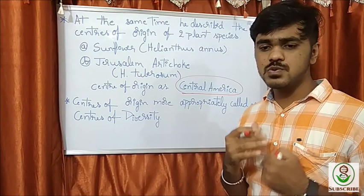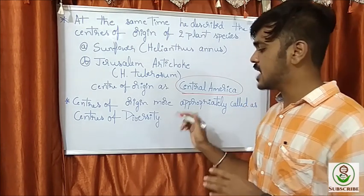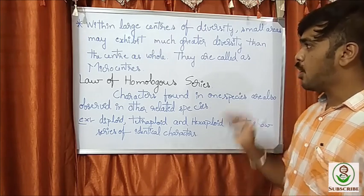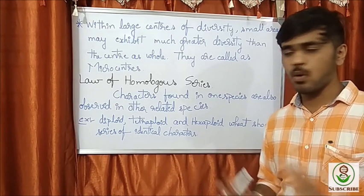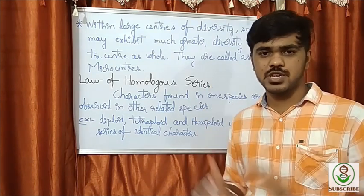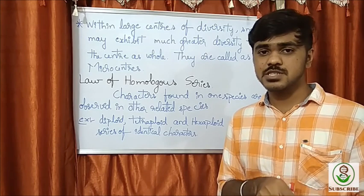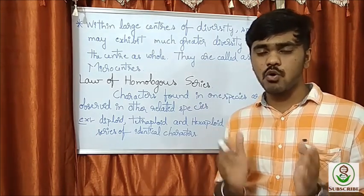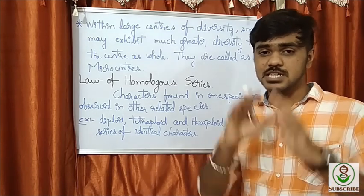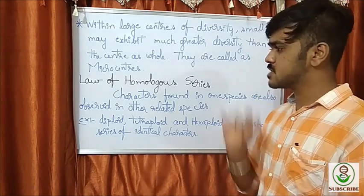Centers of origin are more appropriately called centers of diversity. Within large centers of diversity, small areas may exhibit much greater diversity than the center as a whole — these are called micro centers. For example, if we consider India as a complete center of origin, Western Ghats, which shows maximum diversity within India, would be called a micro center.